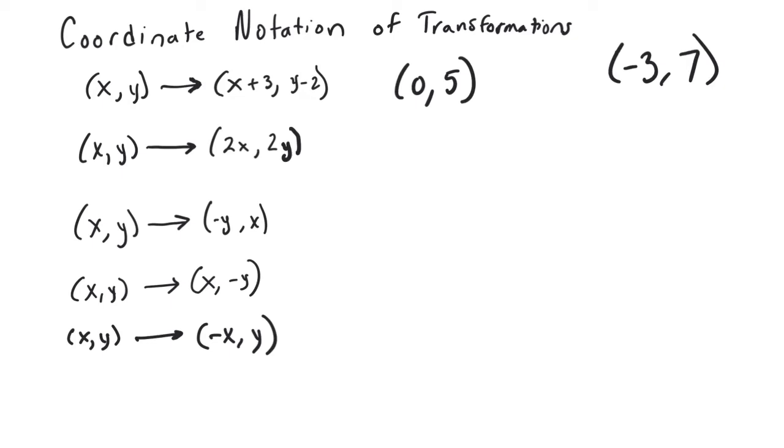All right. On the dilation, we just multiply both by two. So we're going to use the negative three, seven. Again, we're going to have negative six and positive 14. That's just taking this point and multiplying the x by two and multiplying the y by two. It's the only thing that's happening there.